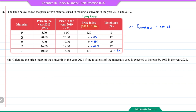Question D: calculate the price index of the souvenir in the year 2021 if the total cost of materials is expected to increase by 10% in 2021. When the total cost increases by 10%, the price index will be more than 100. So the index number will be 100 + 10 = 110.